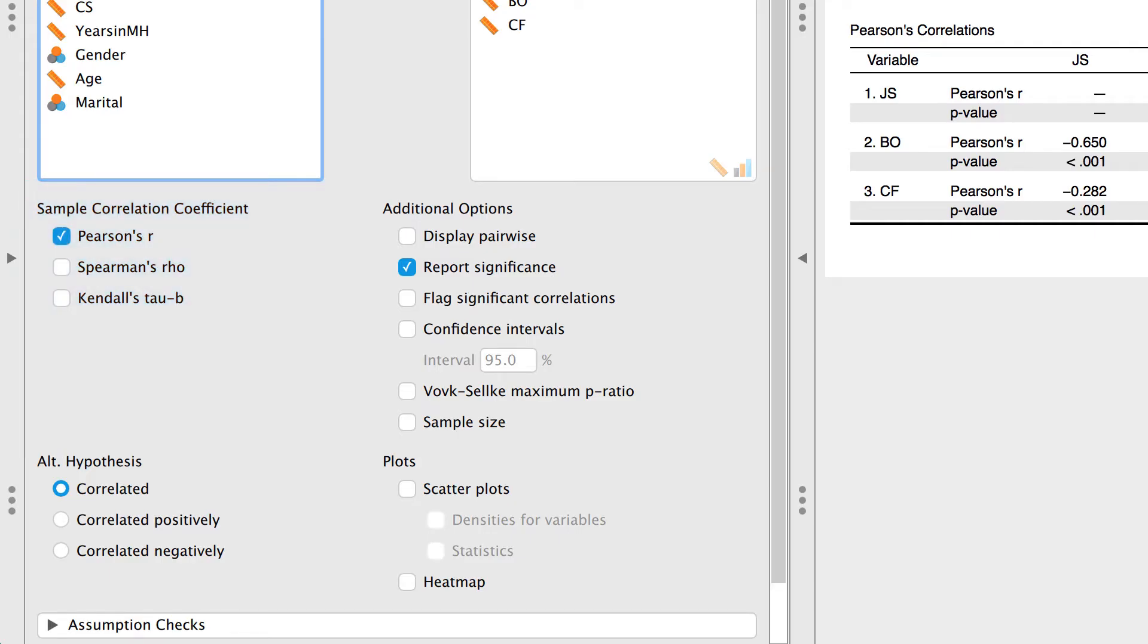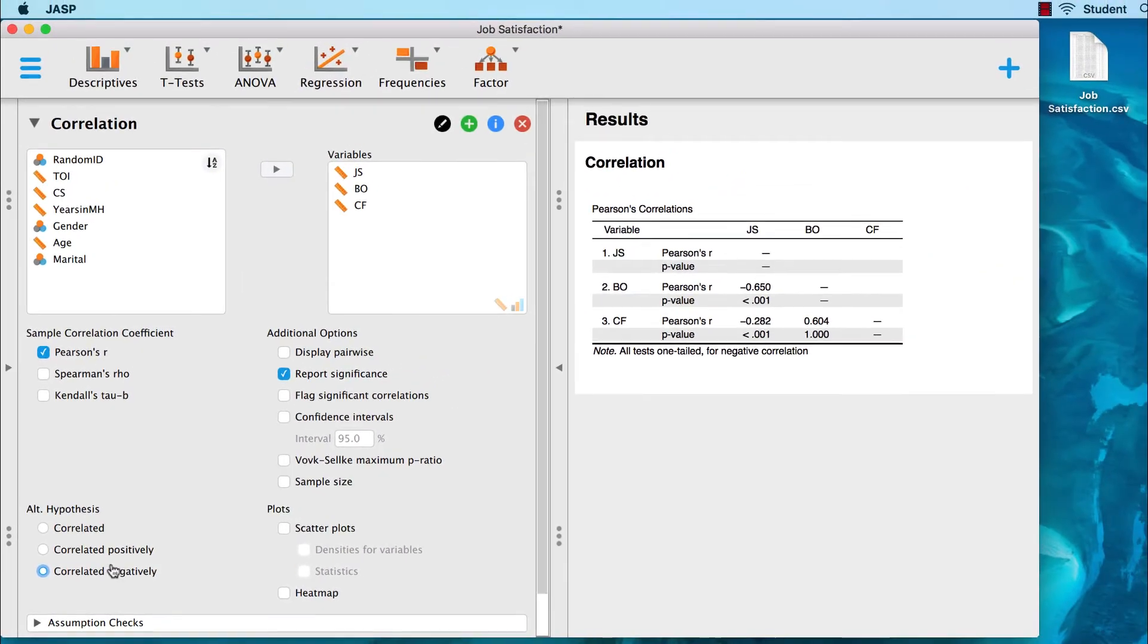The option for Pearson correlation is set by default. In other examples, we would choose Spearman's rho, or Kendall's tau. The alternative hypothesis is a two-tailed test. It is not positively correlated or negatively correlated. Significant correlations in either direction will be important to us. We want to flag significant correlations, and sample size will be important for the APA write-up.